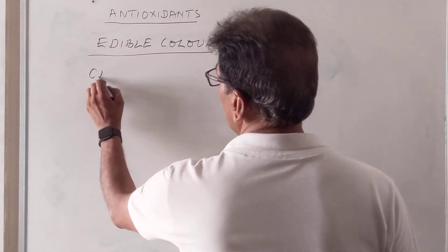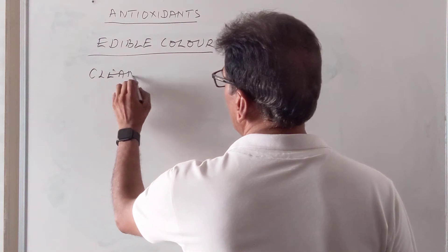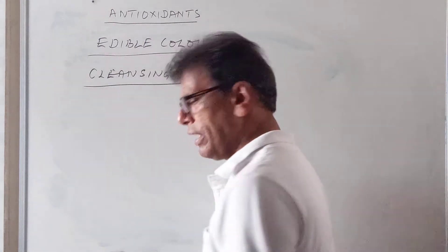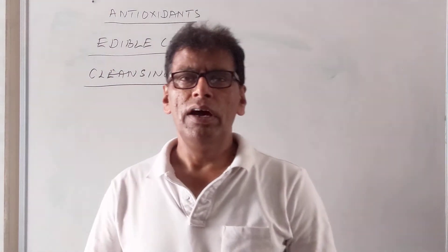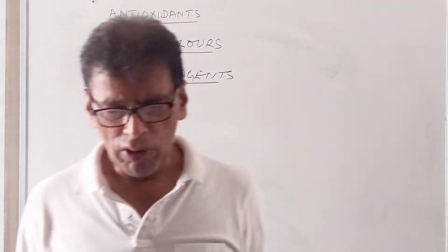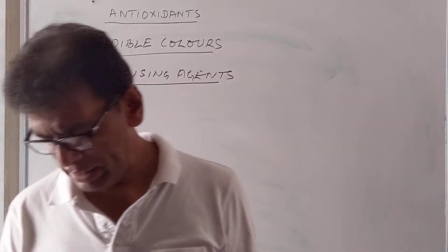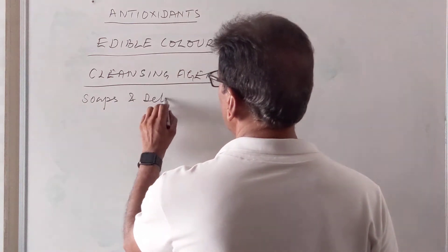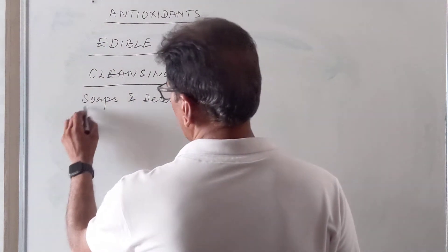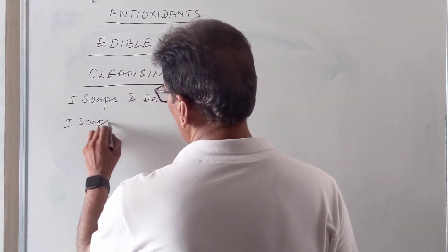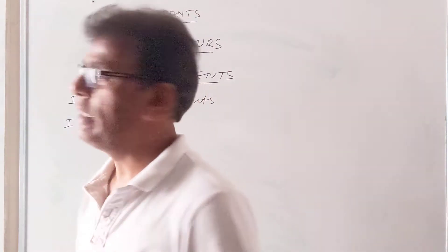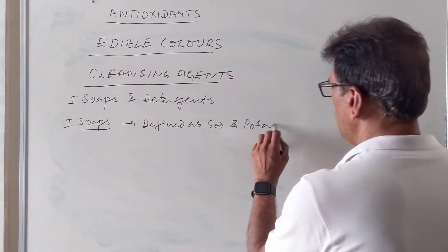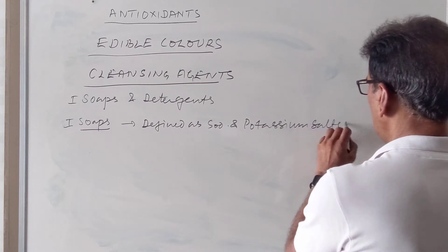The last topic of this unit is cleansing agents. Cleansing agents are used to clean fabrics, our bodies, and household items. There are two major types: soaps and detergents. Soaps are defined as sodium and potassium salts of fatty acids.